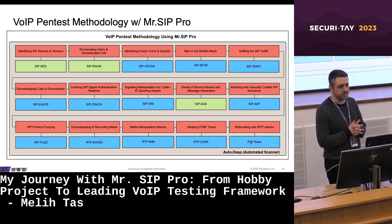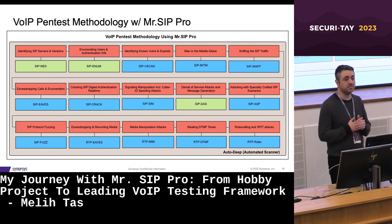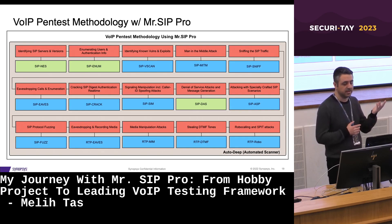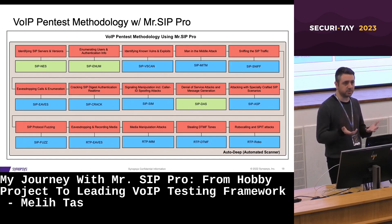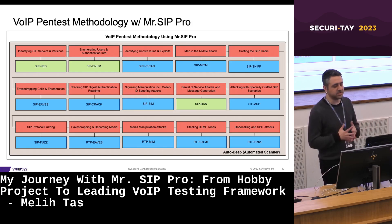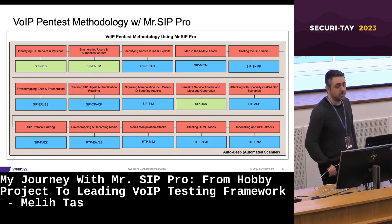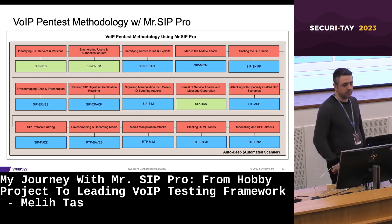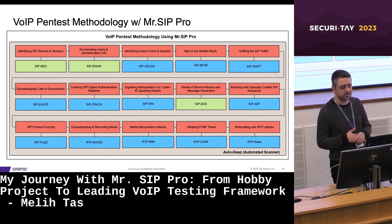Mr. SIP Pro provides a comprehensive set of features to test and secure SIP-based communications. The Voice over IP pen-test methodology with Mr. SIP Pro consists of: identifying SIP servers and enumerating users; registration hijacking via SIP Digest Authentication cracking; sniffing via application-level man-in-the-middle; caller ID spoofing via SIP signaling manipulation; enumeration via eavesdropping on calls; searching for known vulnerabilities and exploits based on product, brand and version; and telephony denial-of-service attacks powered by IP spoofing.